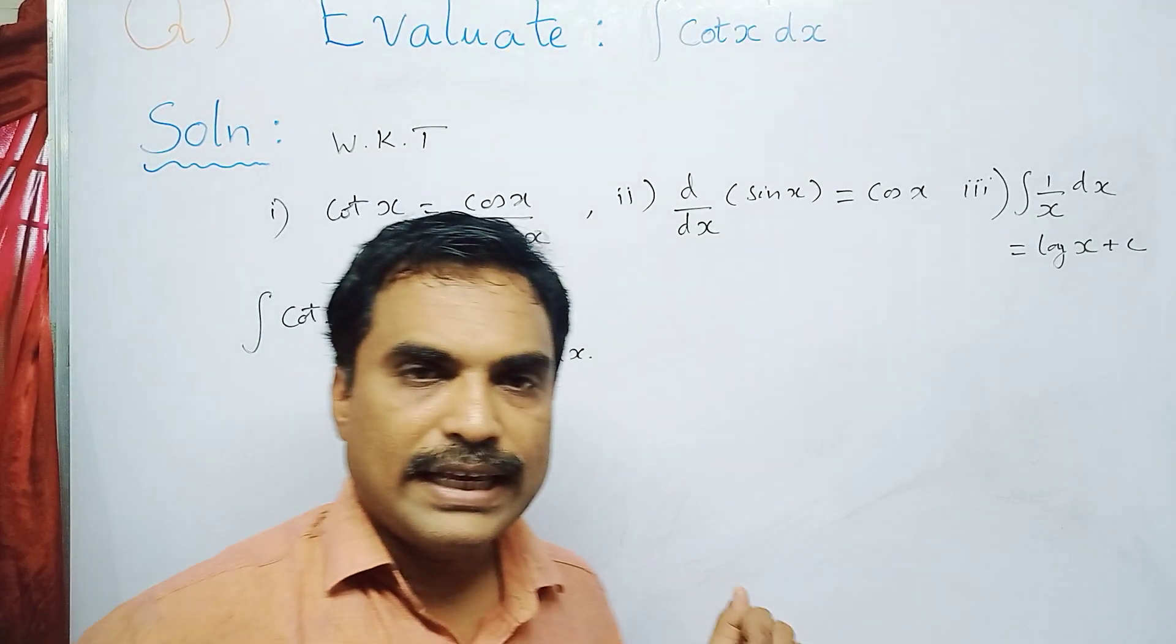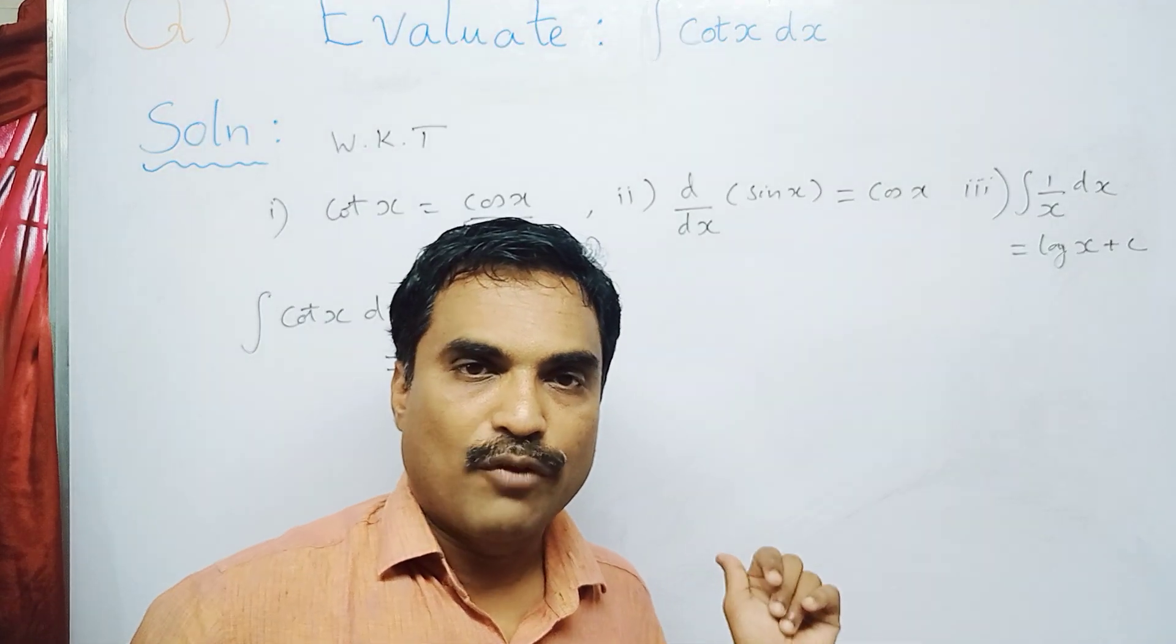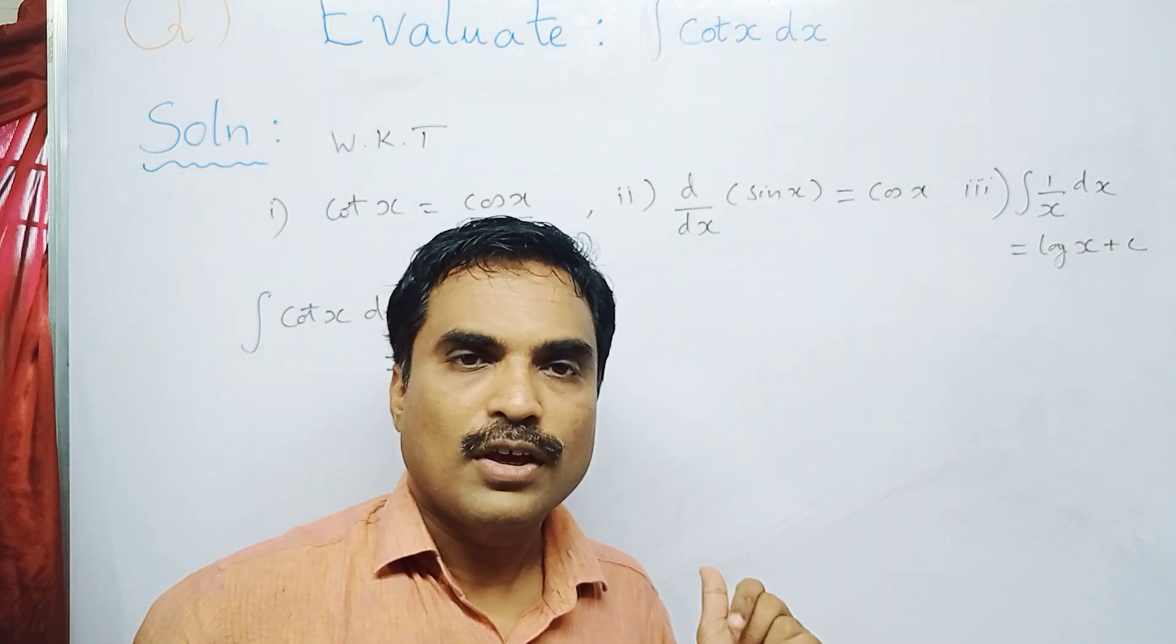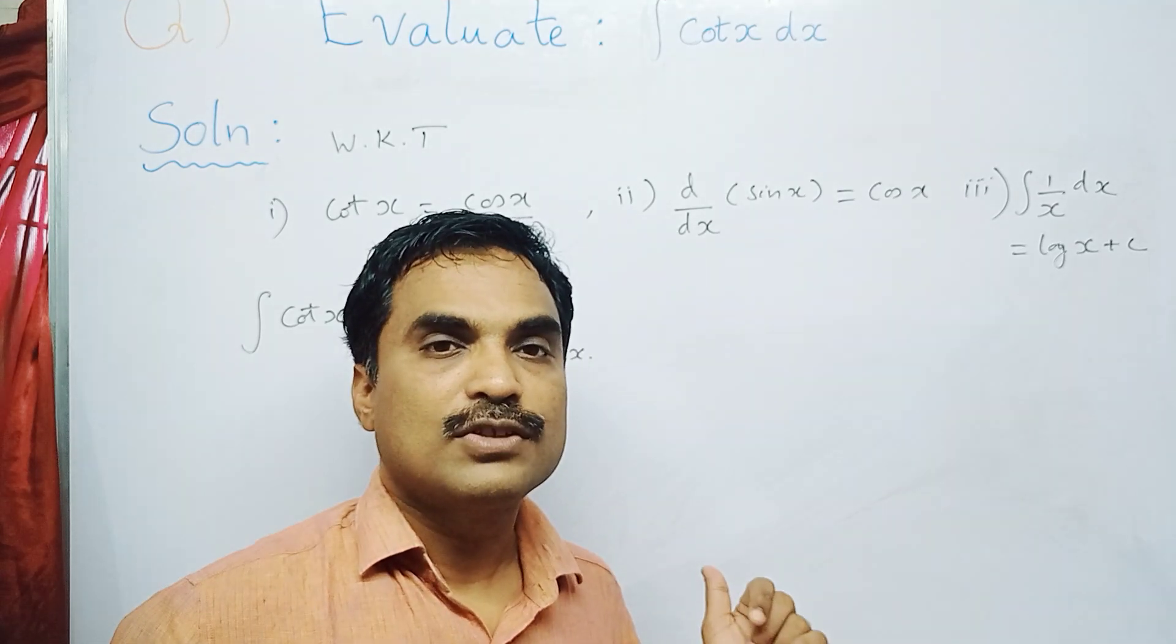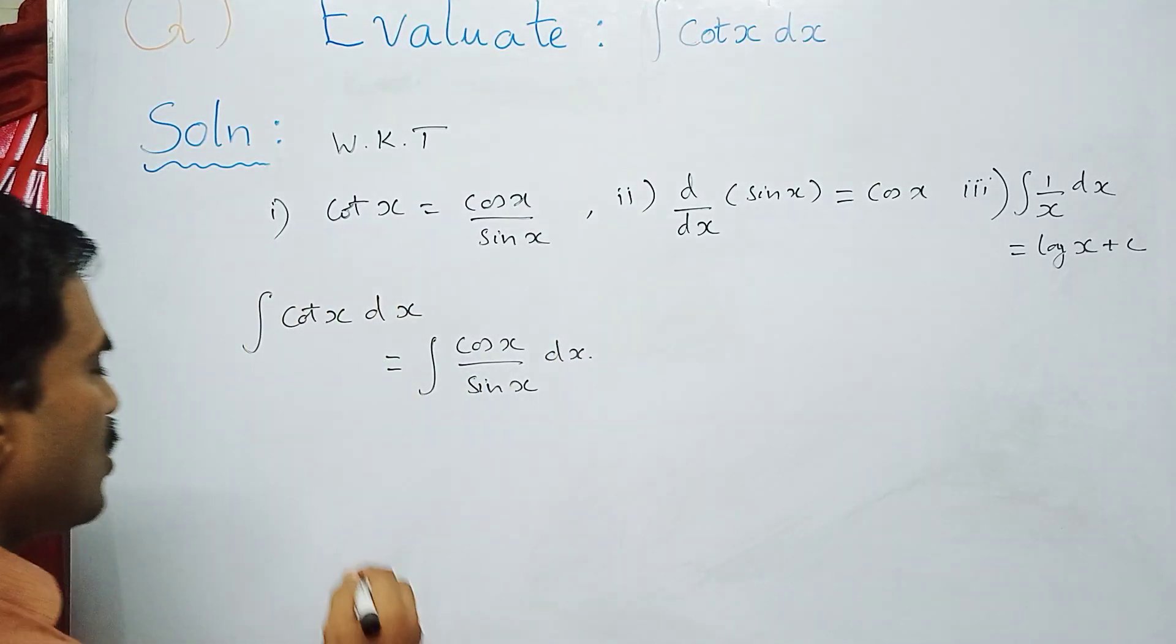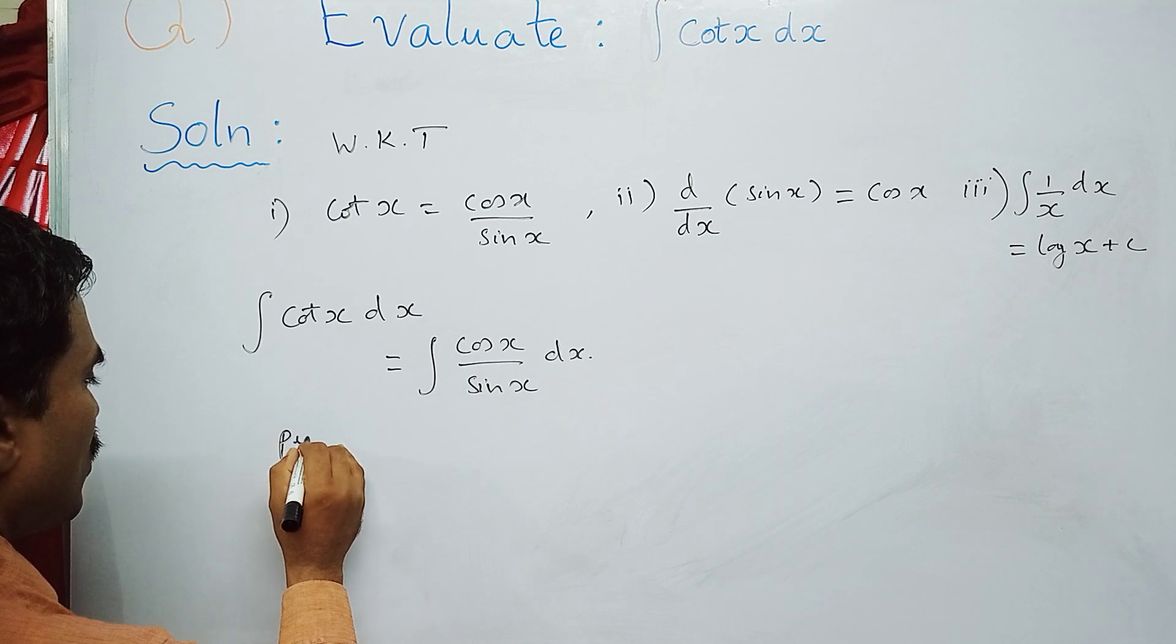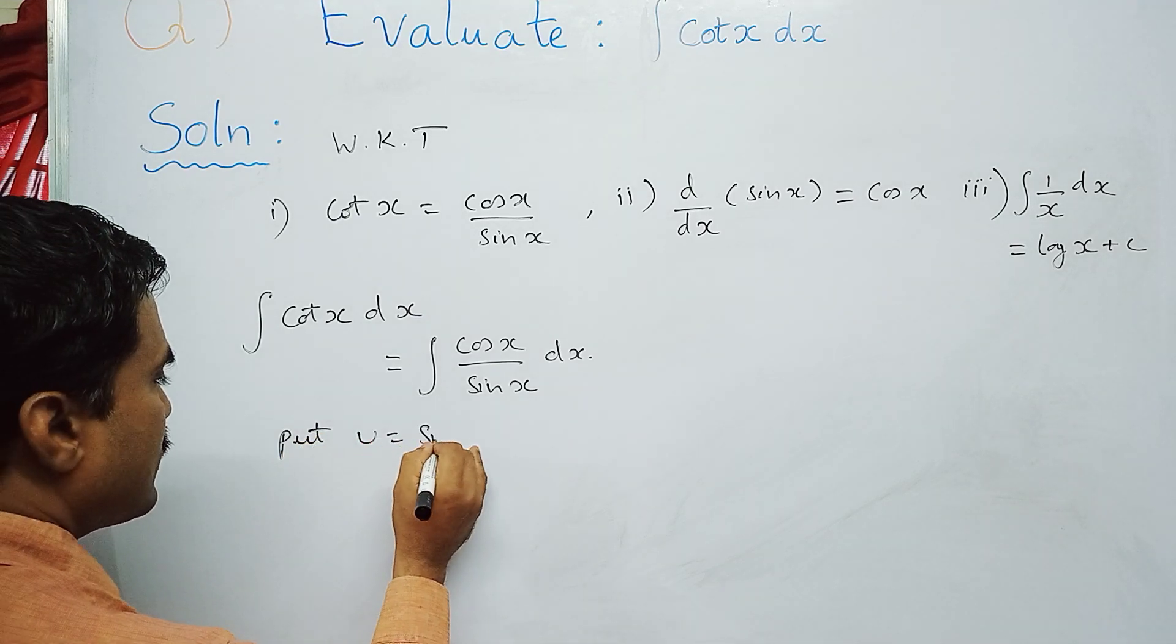Put u = sin x and differentiate on both sides. The left-hand side is du/dx. Now d/dx of sin x, apply the second formula: d/dx of sin x is cos x.